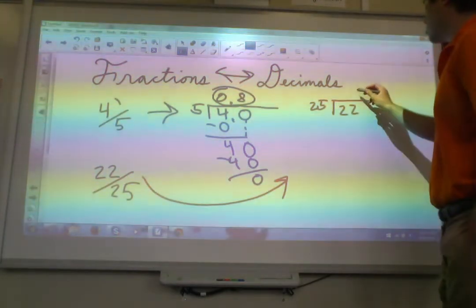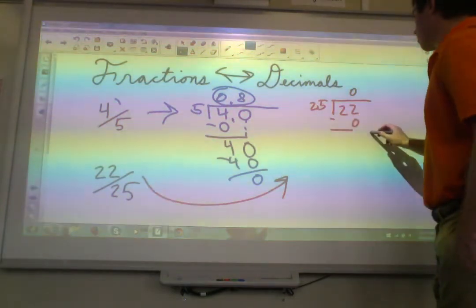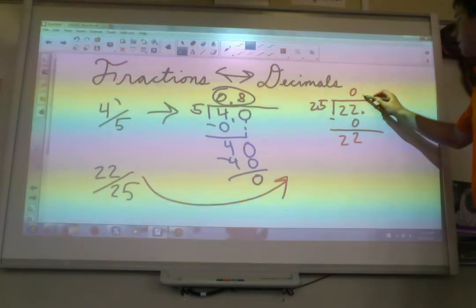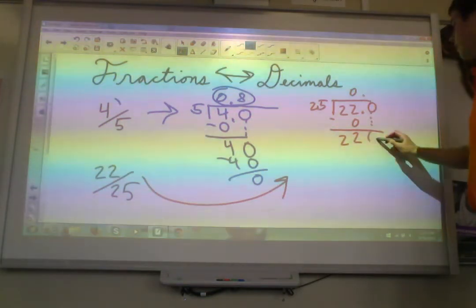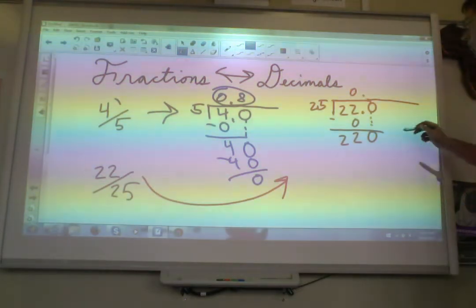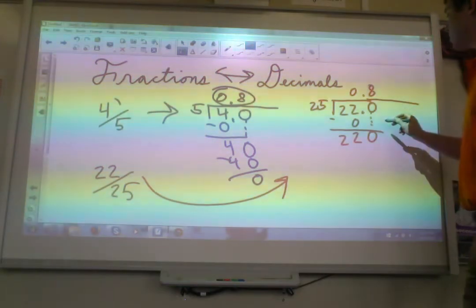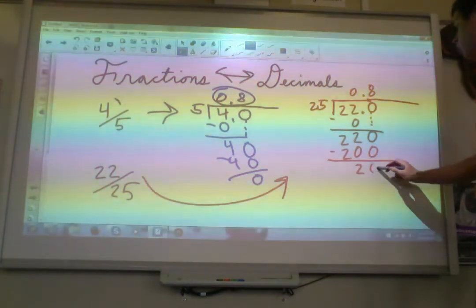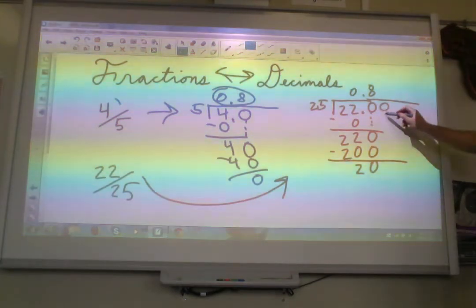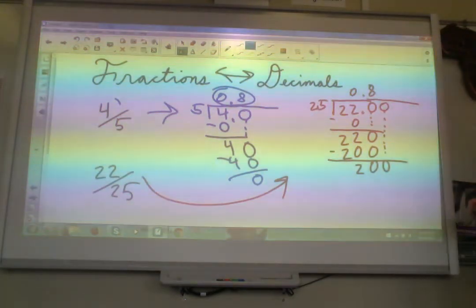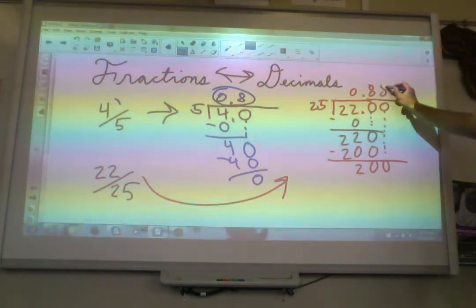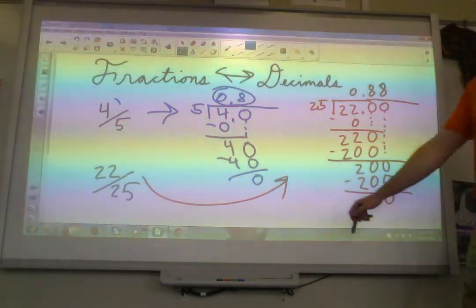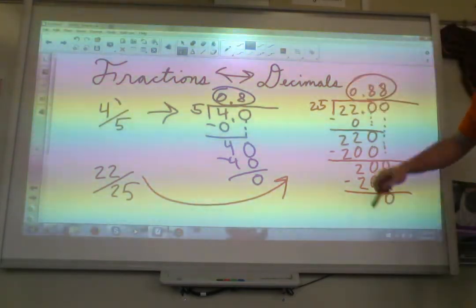How many times does 25 go into 22? 0 times. Subtract and we get 22. Again, we're going to have to add in a decimal here, add in a decimal here, put a 0, and drop it down. Now we can put 25 into 220. Okay, that's going to be about 8 times. 8 times 25 is 200. Subtract that and we get 20. We still have a remainder here, so we can add another 0, drop it down. 200. How many times does 25 go into 200? That's exactly 8 times. And now we're going to take care of our remainder. And there we have it.